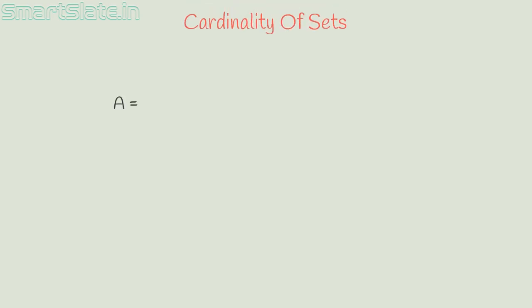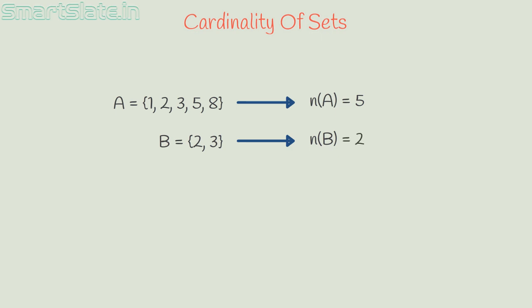If set A has elements 1, 2, 3, 5 and 8, then cardinality is called as the number of distinct elements of the set. That is, cardinality of set A, which is denoted as n of A, is 5. If set B has elements 2 and 3, then cardinality of set B, n of B, is 2.